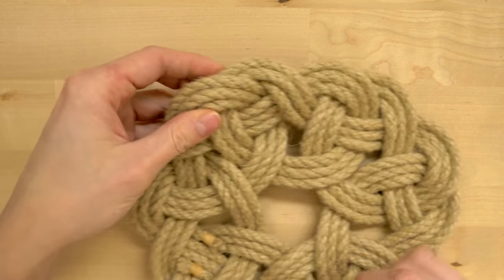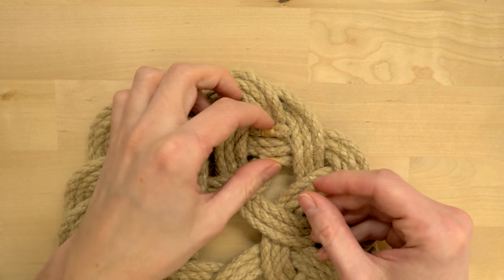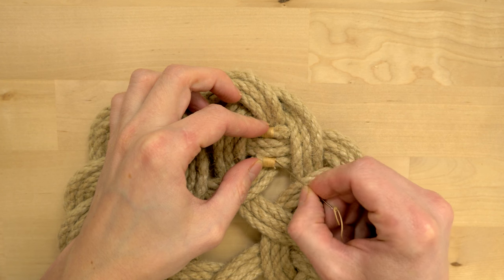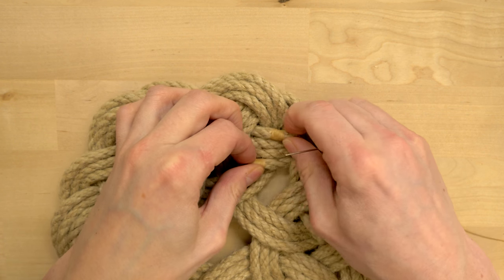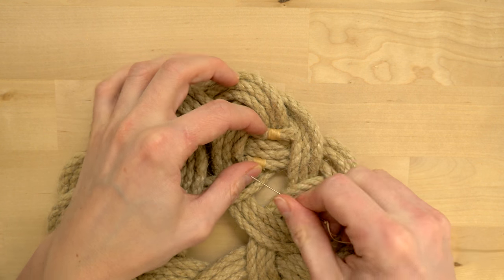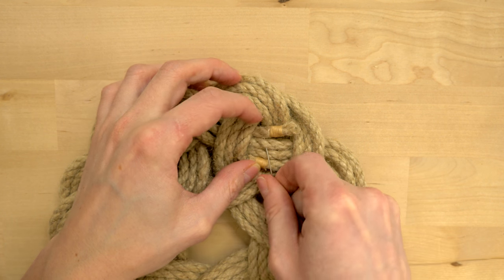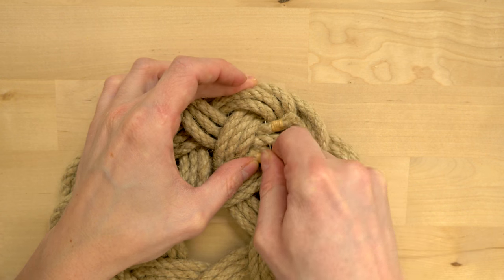Once we have done that, we come to the spot where both of our ends meet. We're going to stitch them together by first traveling through two of my passes going towards the top side.